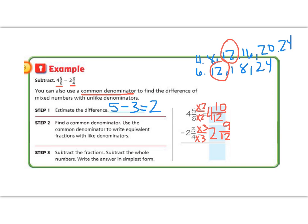10 minus 9 is 1/12. And 4 minus 2 is 2. So we get the answer 2 and 1/12. 1/12 is a pretty small fraction, so we could say that our answer of 2 is close to our estimate. So we are correct. Great job so far, 5th graders.